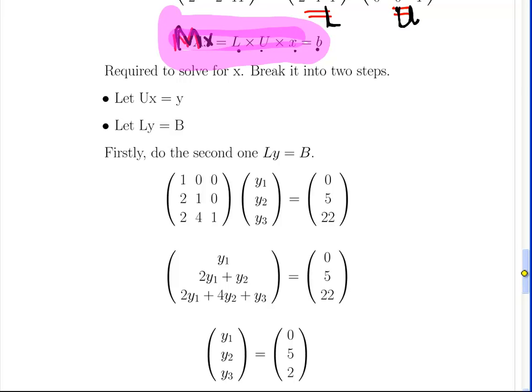So we have mx is equal to LUx and that's equal to b. What I'm going to do here is let UX equal to this expression y. So I'm going to just create a sub-expression here, Ly is equal to b. So I'm going to split it up into two parts. I'm going to let UX equal to y and then Ly equal to b.